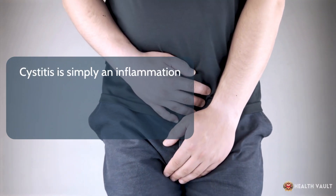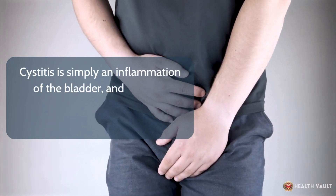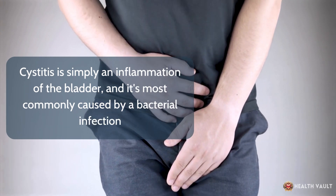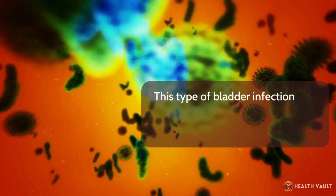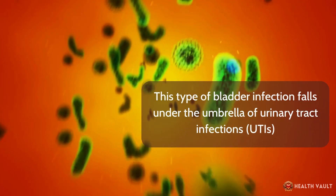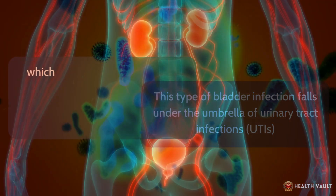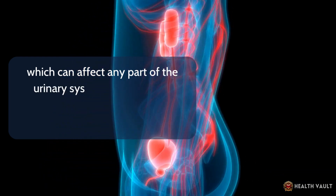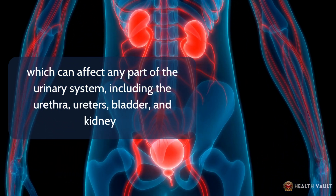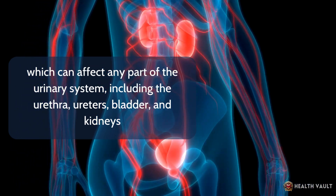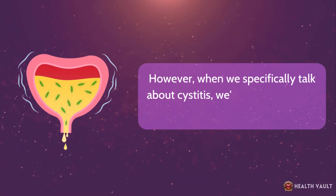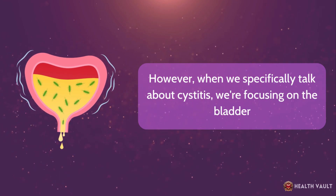Cystitis is simply an inflammation of the bladder, and it's most commonly caused by a bacterial infection. This type of bladder infection falls under the umbrella of urinary tract infections, which can affect any part of the urinary system, including the urethra, ureters, bladder, and kidneys. However, when we specifically talk about cystitis, we're focusing on the bladder.